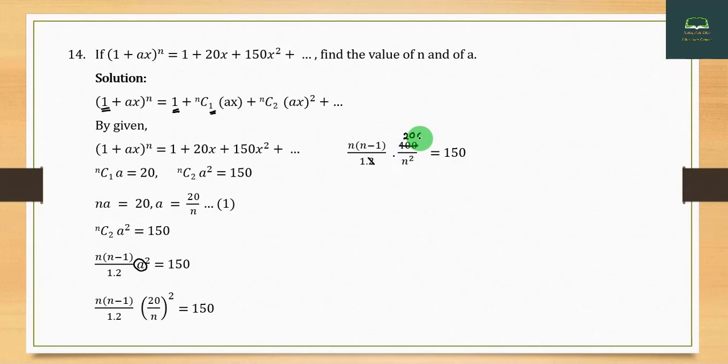Simplifying: [n(n-1)/2]·(400/n²) = 150. This gives (n-1)·200/n = 150. Solving: 200(n-1) = 150n, so 200n - 200 = 150n, thus 50n = 200 and n = 4. Then a = 20/4 = 5.